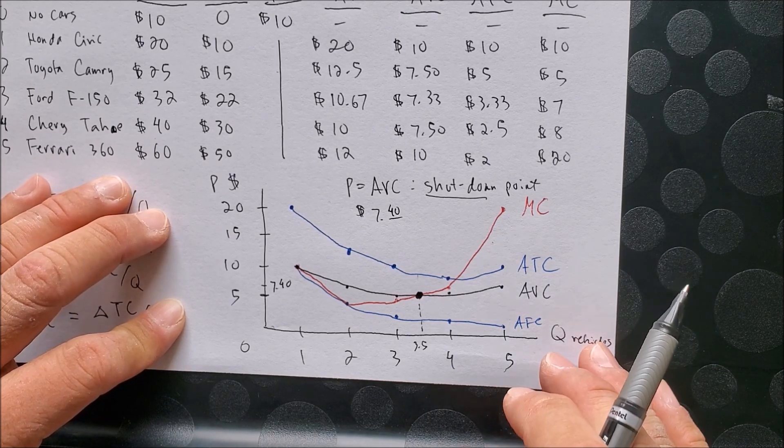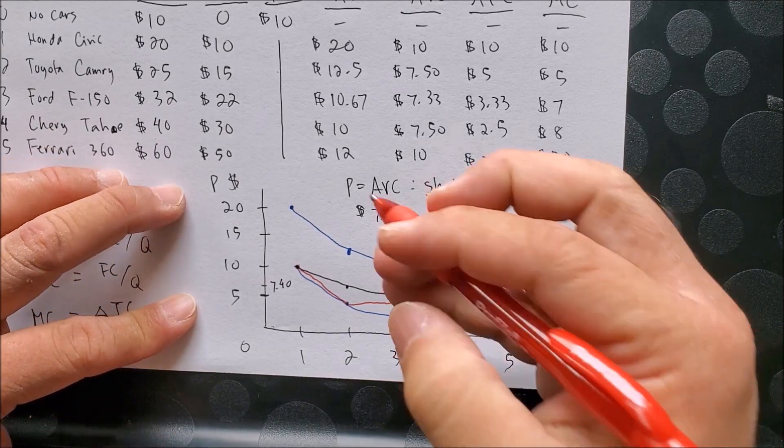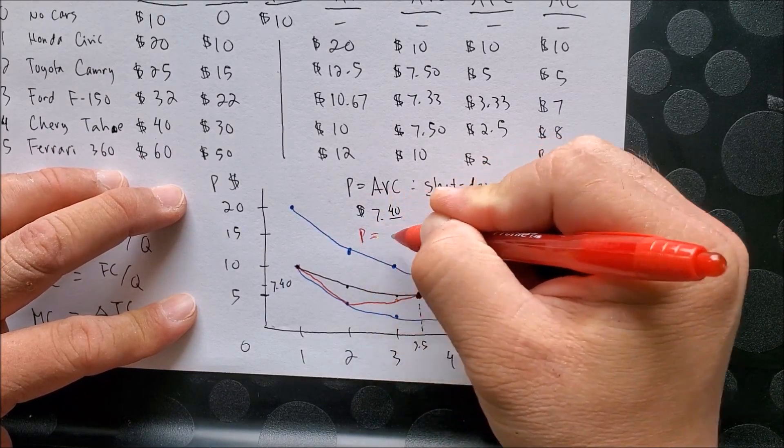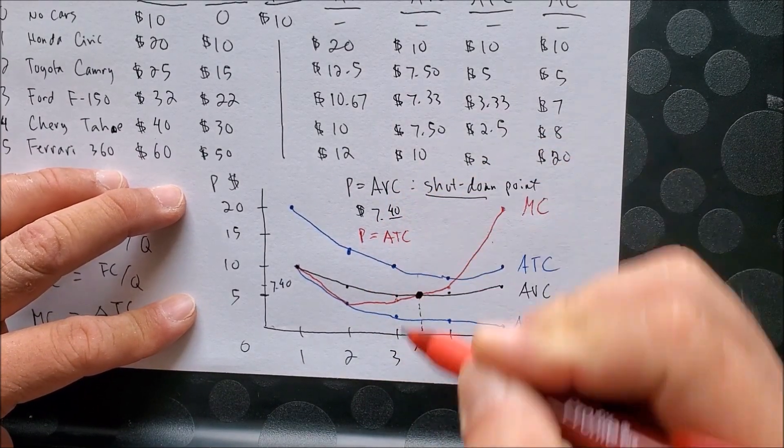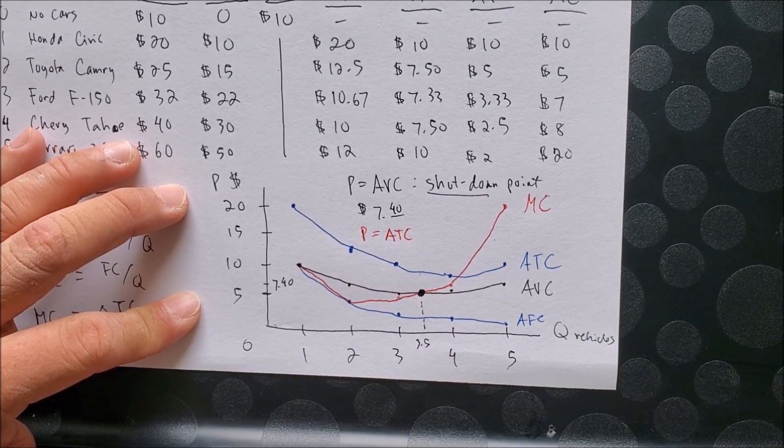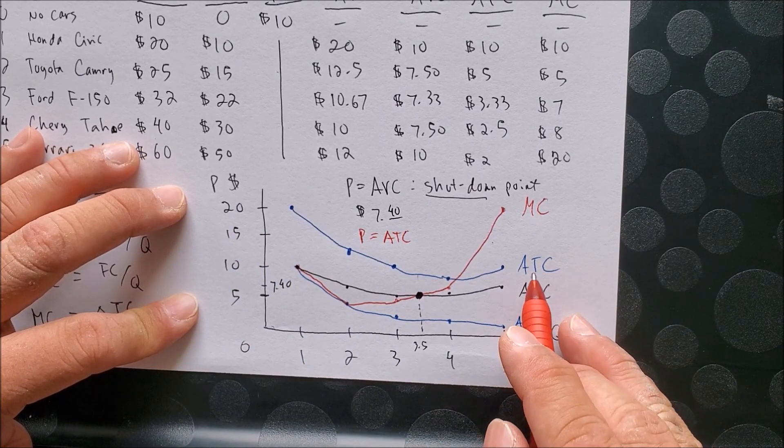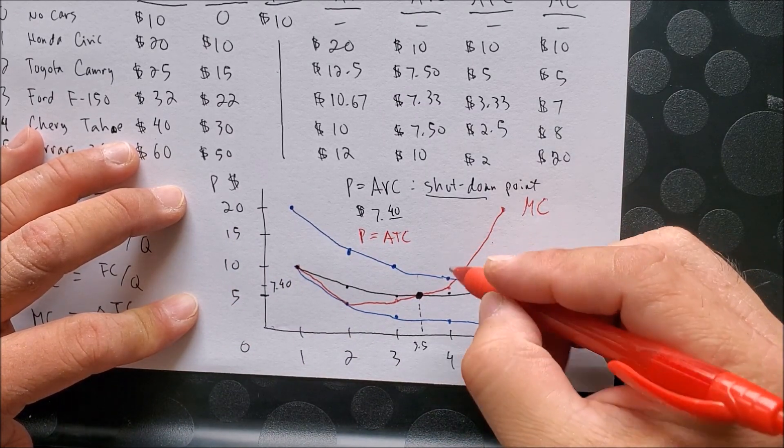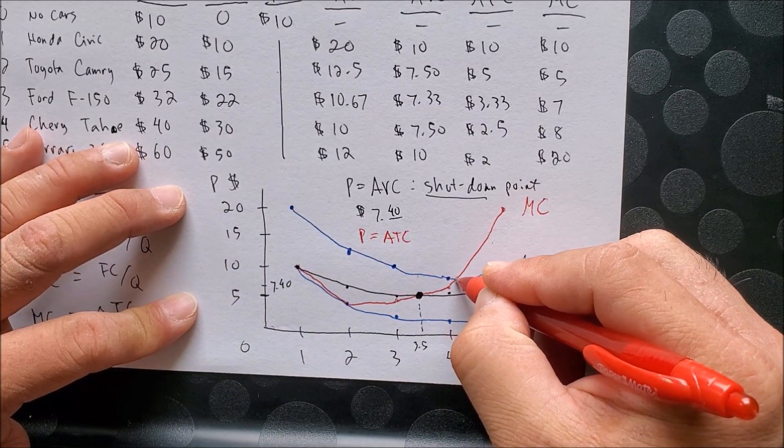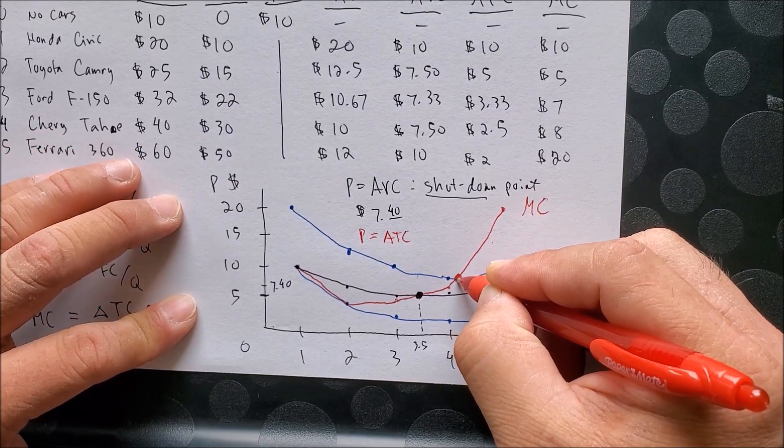Now the other point we are interested in is finding where price is equal to the average total cost. P equals ATC. Again, price on the y-axis. ATC is blue, and it looks to be somewhere around here, right here, would be our price equals ATC.